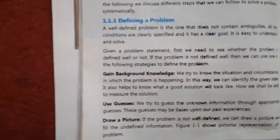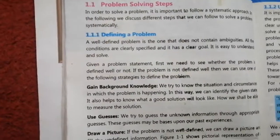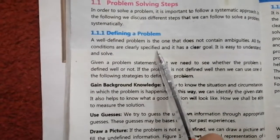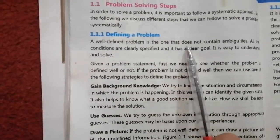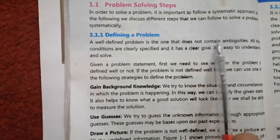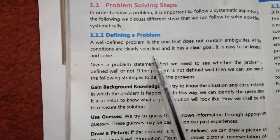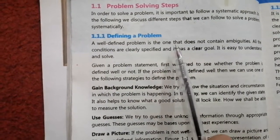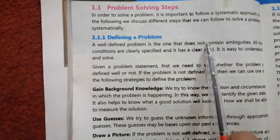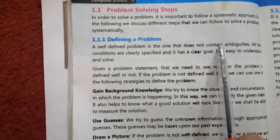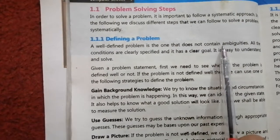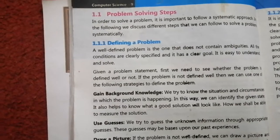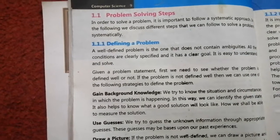What is the problem? A well-defined problem is the one that does not contain ambiguity. Ambiguity means there is confusion. A well-defined problem has no ambiguity — there is no confusion.